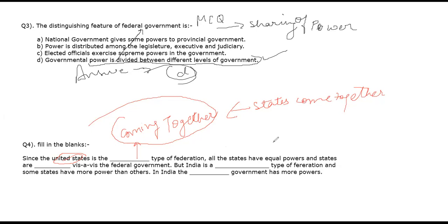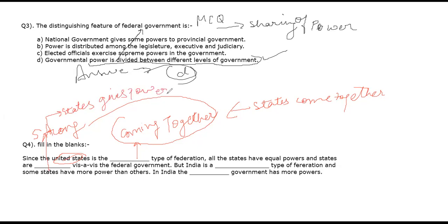All the states have equal powers, and states are strong with the federal government. The answer will be 'strong,' because in the USA the states give power to the central government. So states have equal power as the central government. The central government cannot make decisions on its own without considering the states. So the state governments are as strong as the central government.